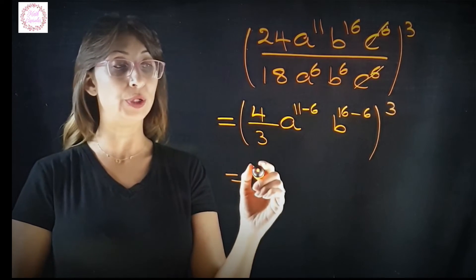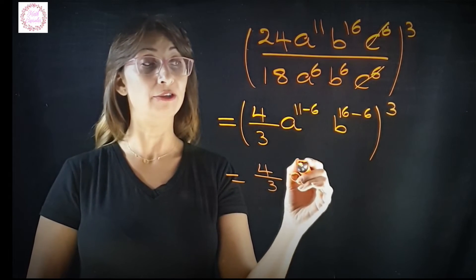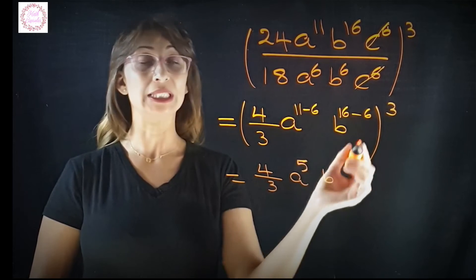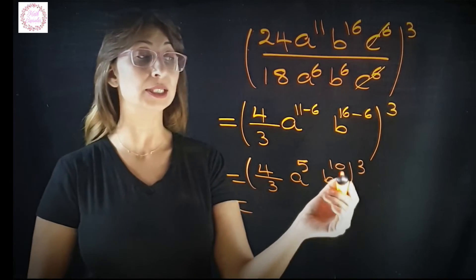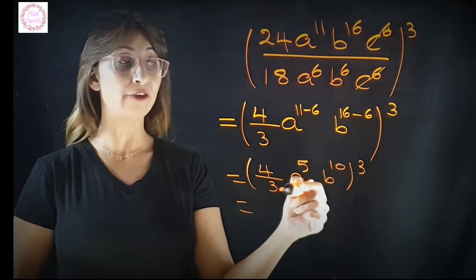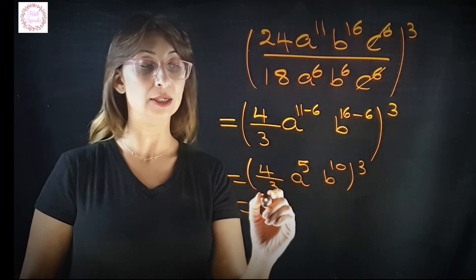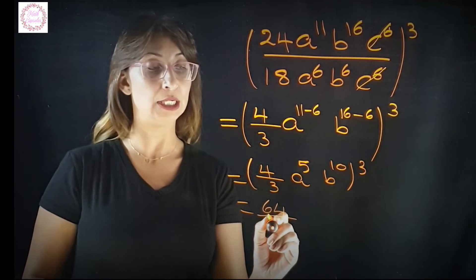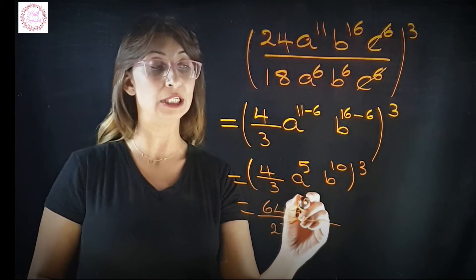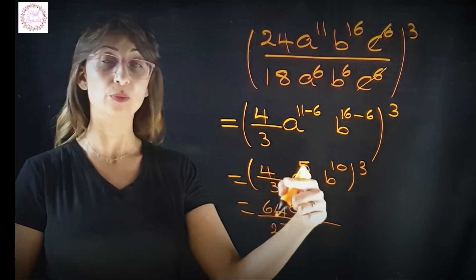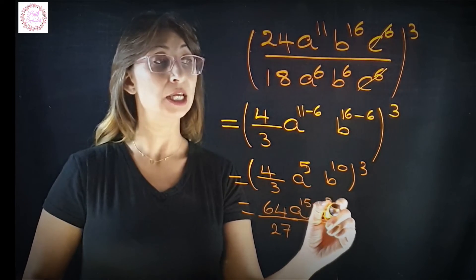Continuing: 4 over 3, a power 11 minus 6 is a power 5, and b power 16 minus 6 is b power 10, all raised to the power of 3. Distributing the power: 4 power 3 is 64 and 3 power 3 is 27. For a: 5 times 3 is 15, so a power 15. For b: 10 times 3 is 30, so b power 30. The final simplified form is 64 a power 15 b power 30 over 27.